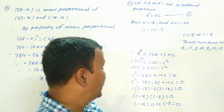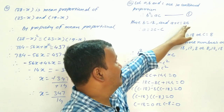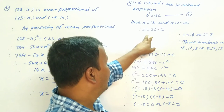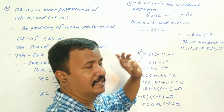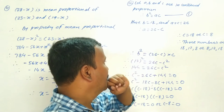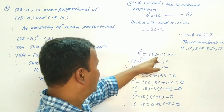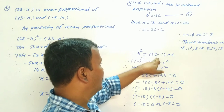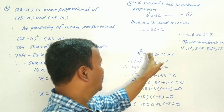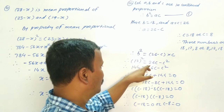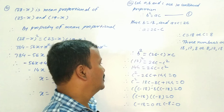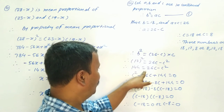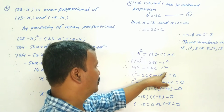Since a plus c equals 26, we write a equals 26 minus c. Substituting into b squared equals a into c: 12 squared equals (26 minus c) into c. So 144 equals 26c minus c squared.